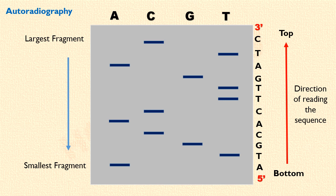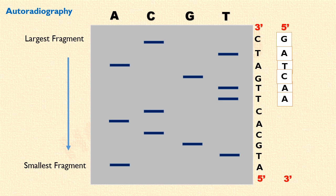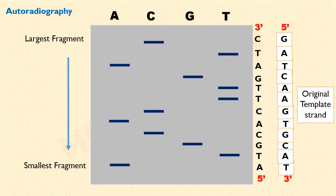Now, the sequence we read is the sequence of the newly synthesized strand. So what will be the sequence of the template strand? It will be complementary to the sequence read from the autoradiograph. This is the 5' end of the template strand and this is the 3' end. And the sequence is: G, A, T, C, A, A, G, T, G, G, C, A, T. Thus, we successfully obtained the sequence of the given DNA strand.